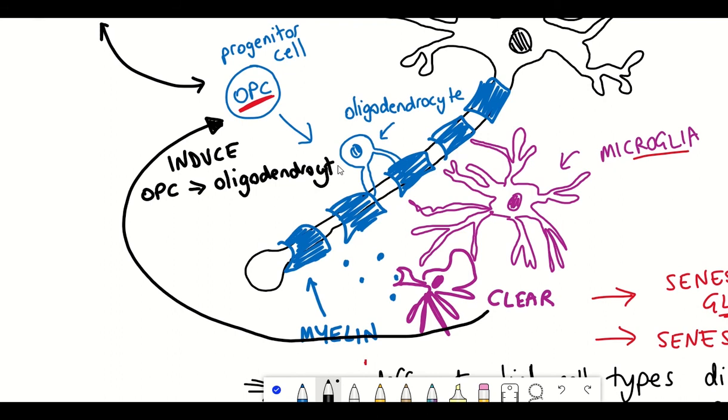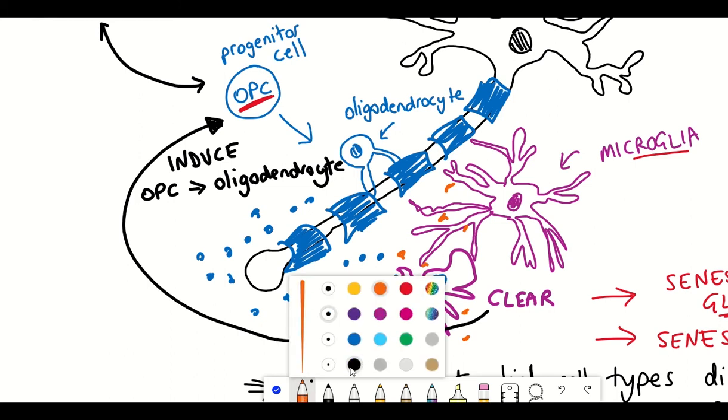One thought is that if the accumulation of myelin debris is greater than the microglia's ability to degrade the fragments they can end up becoming senescent and release these pro-inflammatory factors.